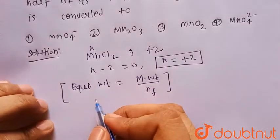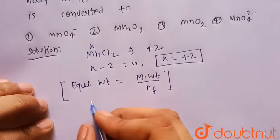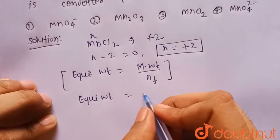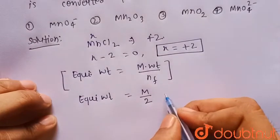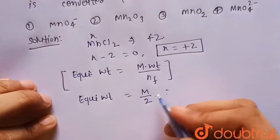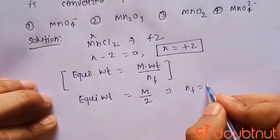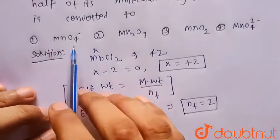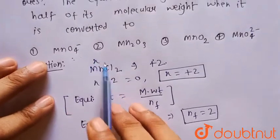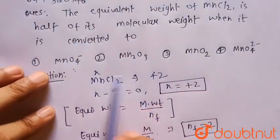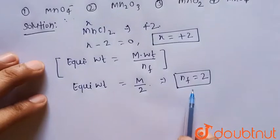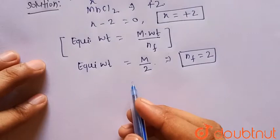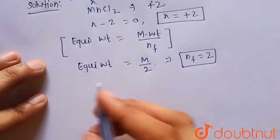It is given that the equivalent weight of MnCl2 is half of its molecular weight, so equivalent weight = M/2. Comparing with the formula, n-factor = 2. So we have to find that compound to which MnCl2 is converted where the change in oxidation number equals 2, which is the n-factor.